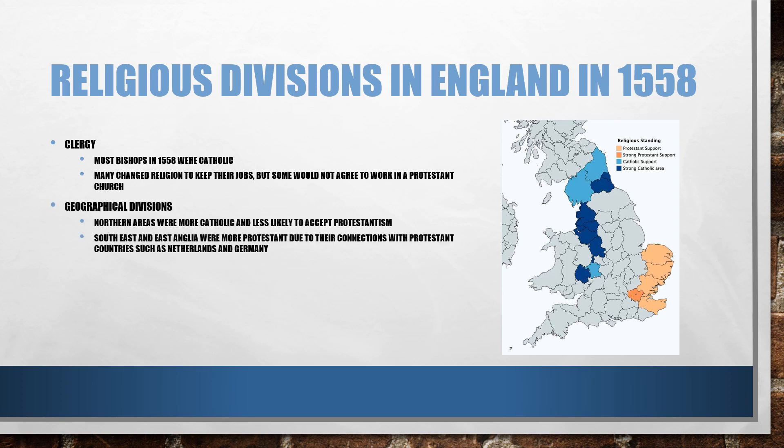In terms of the geographical divisions, the map on the right hand side shows the differences in areas of support, with strong Catholic areas situated in the north and northwest of England and stronger Protestant support in East Anglia, the southeast and London. There are also connections to the southeast with regards to other countries in Europe at the time that were Protestant, for example the Netherlands and Germany.